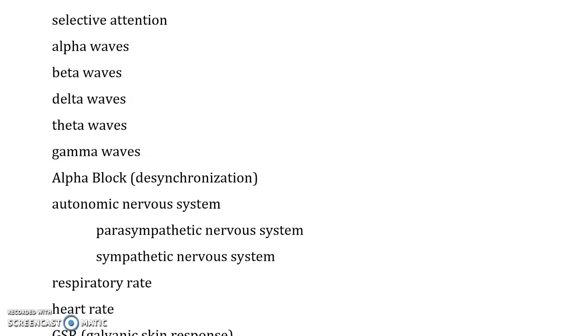Delta waves, D for deep sleep. Delta waves have high amplitude and low frequency. Those are large waves and they are indicative of somebody being in a deep sleep state.